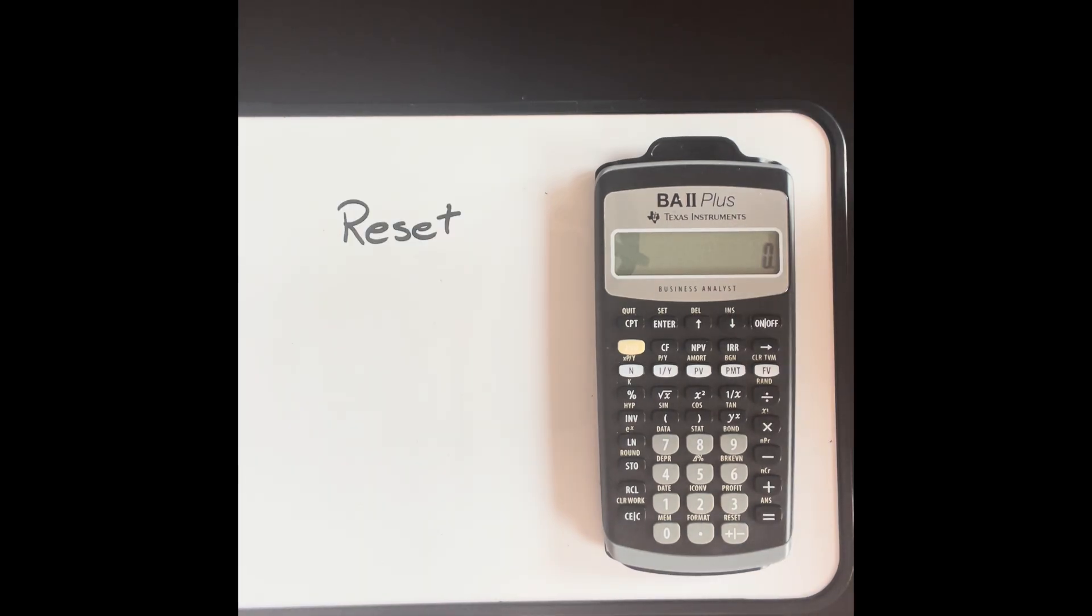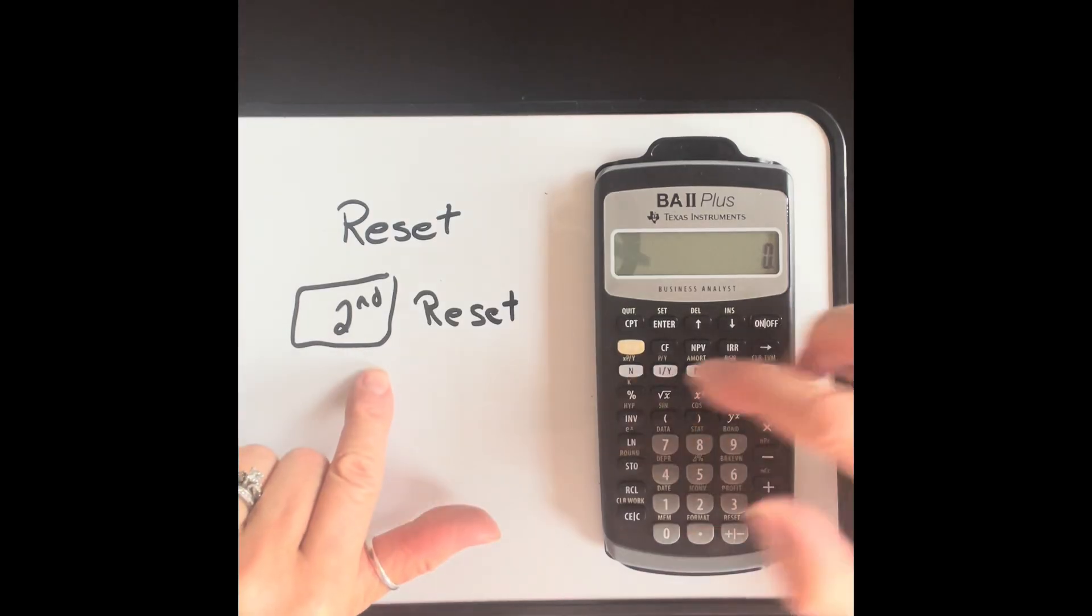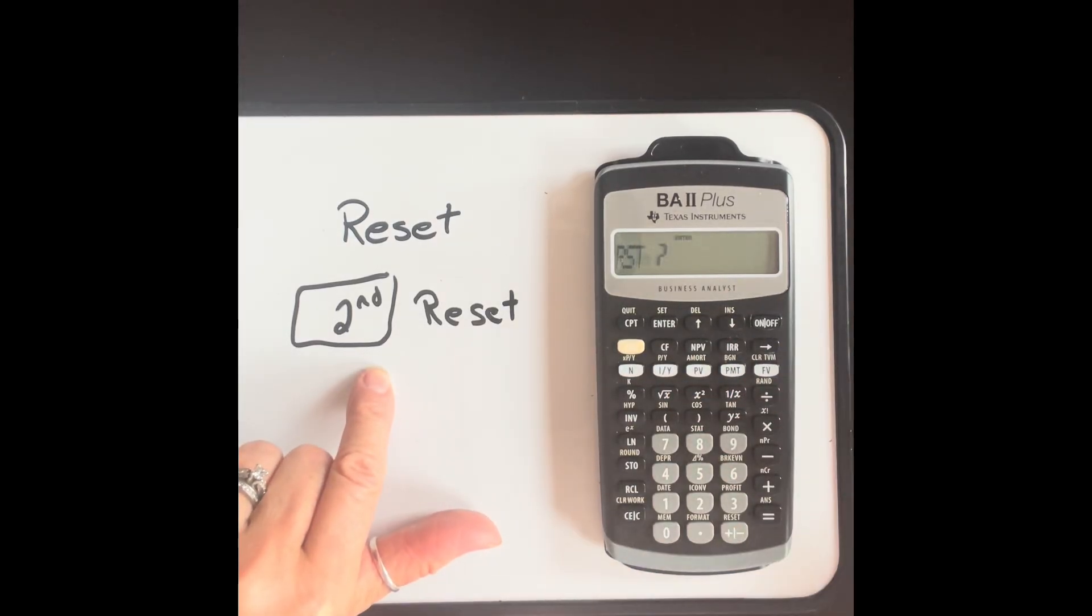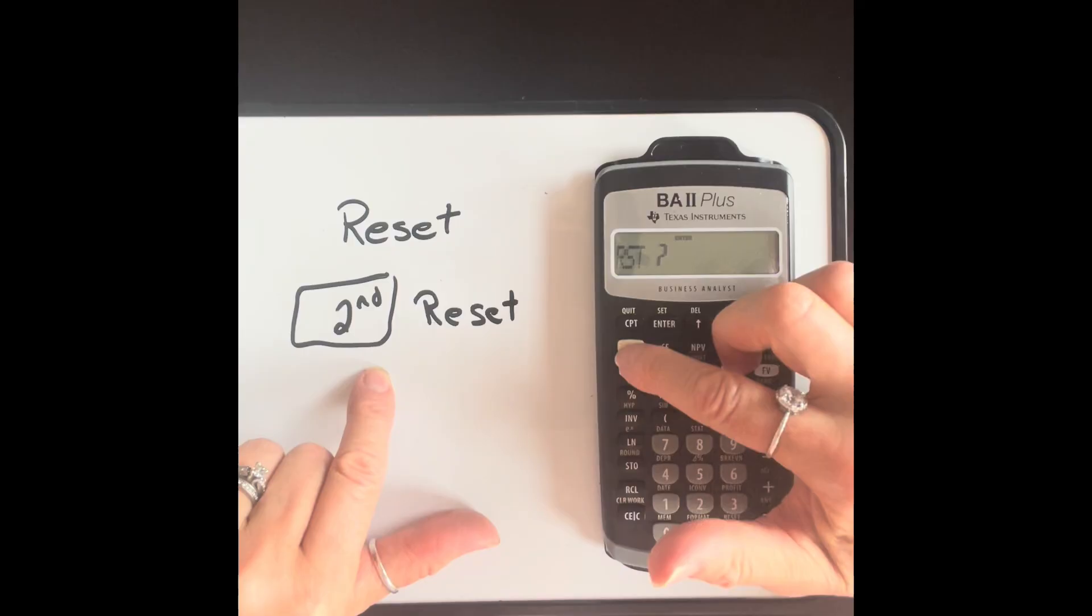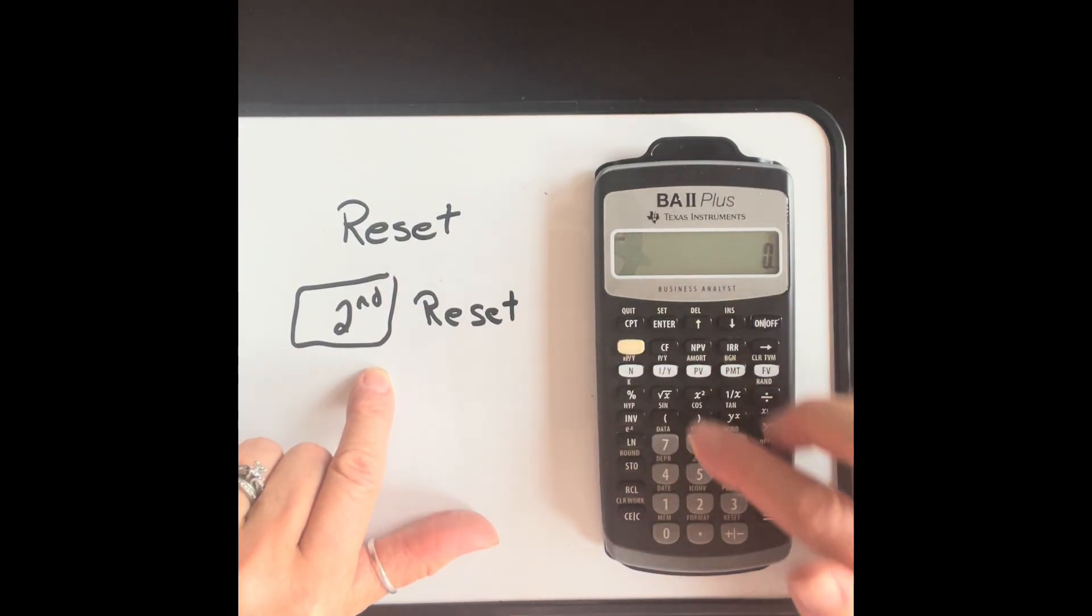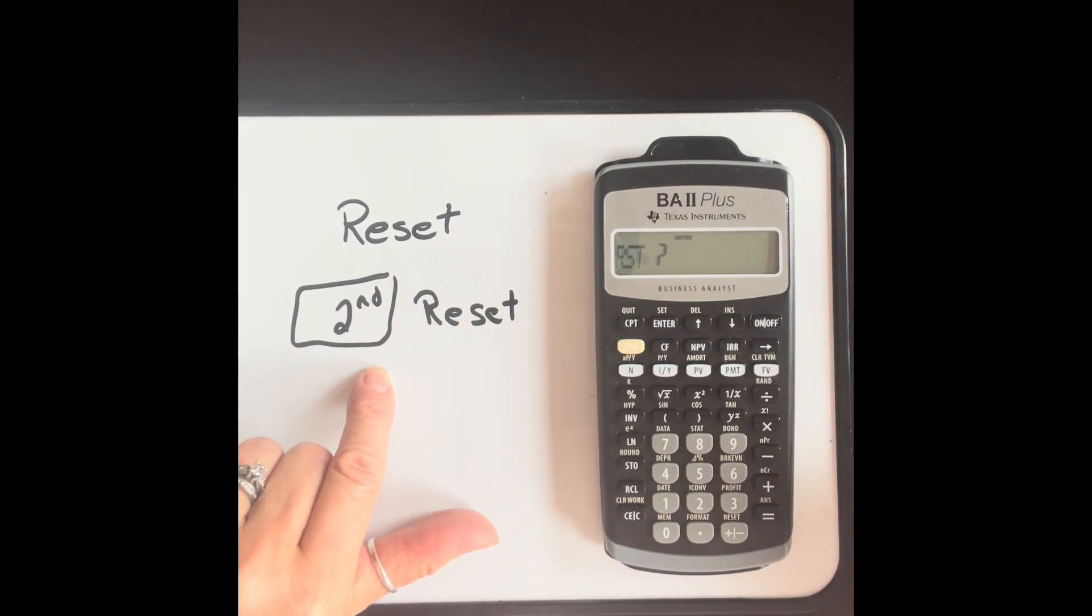It's possible to reset your calculator. And when you do that, it will clear not only the display, but all of the memories, all of the worksheets, all the unfinished calculations, and it restores your calculator to default settings. In order to do that, you're going to press your second function and then reset. It's going to ask you to confirm. So you would press enter. If you change your mind, you can always go second quit. So if we go second quit, nothing happened. But if we go second reset, and we want it to reset, we would press enter. Notice that my calculator now went to the default settings, which is two decimal places.